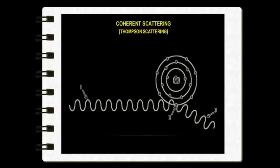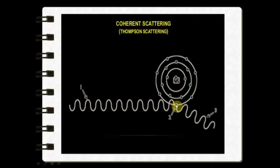The next interaction is coherent scattering. Other synonyms for coherent scattering are Thomson scattering, Rayleigh scattering, and classical or elastic scattering. What occurs here is that a low-energy incident photon interacts with the whole atom, causing momentary excitement. The incident photon then ceases to exist and this excited atom quickly returns to the ground state, generating another x-ray photon.